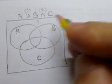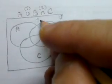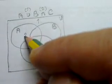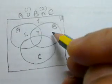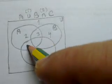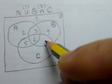In the universal set, region one is outside ABC. Region two here, region three, region four, region five, region six, region seven, and we get eight regions.